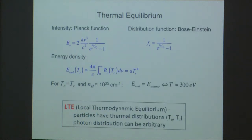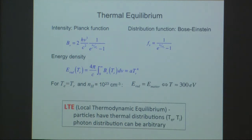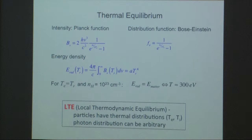The thermal equilibrium distribution of radiation is the Planck function, derived in previous lectures. We can view this in another way: photons are bosons, so this is the Bose-Einstein distribution. The difference between the photon distribution function and the Planck function is just the factor 2H nu cubed over c squared. The total energy density, integrating over all frequencies, if the photons have a distribution characterized by temperature T sub r, is just A T to the fourth.